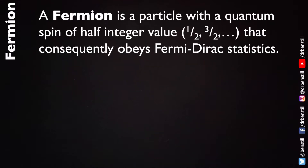A fermion is a particle with a quantum spin of half-integer value, such as a half or three over two. Consequently they obey Fermi-Dirac statistics, which limits the way in which they interact with one another.